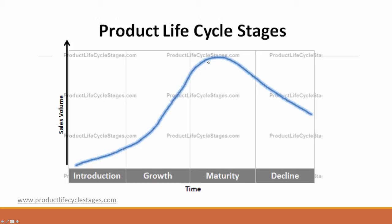Another thing that you might do in maturity is to reintroduce an adaptation of your product, like the Swiffer WetJet instead of just the Swiffer Mop, to keep the sales and demand more stable for your product category.